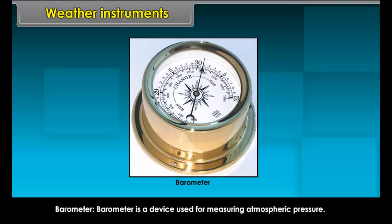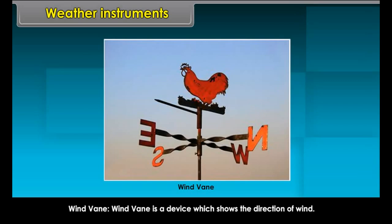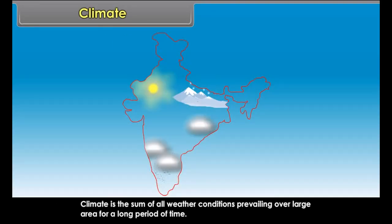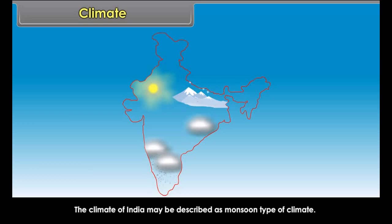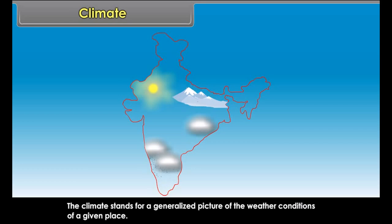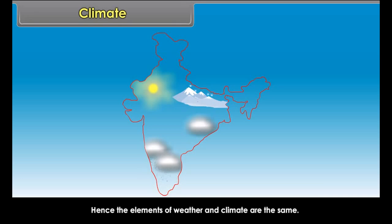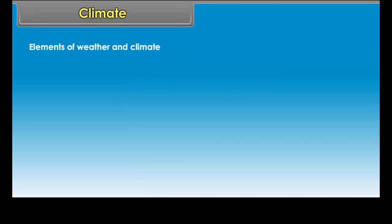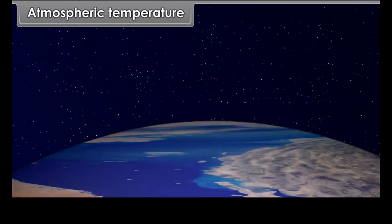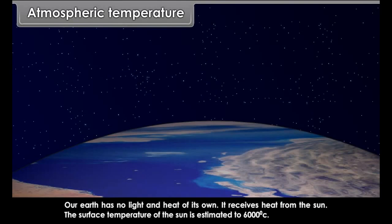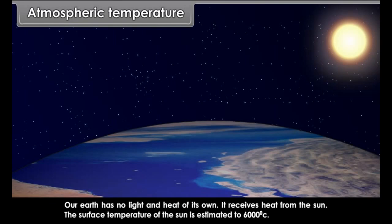Weather is a particular state of the atmosphere prevailing over a small area for a short period of time. Weather is never static — it is dynamic. It changes within a short period of time and varies from place to place. Even within one town, it may be sunny on one side while it may be cloudy on the other. Various devices used for recording various aspects of the weather include the thermometer, used for measuring temperature; the barometer, used for measuring atmospheric pressure; the wind vane, which shows the direction of wind; and the anemometer, used for measuring wind speed.